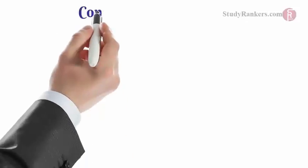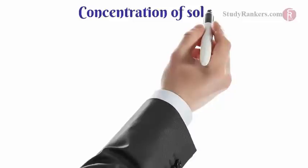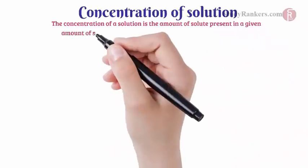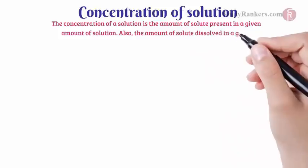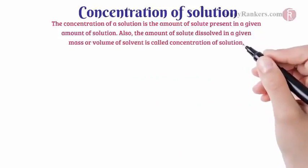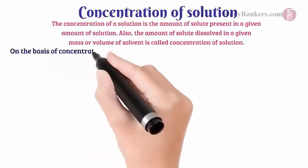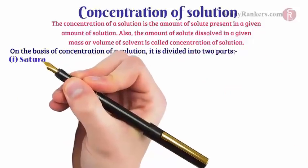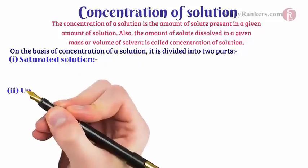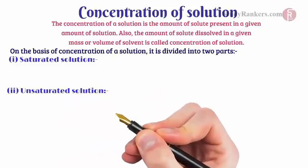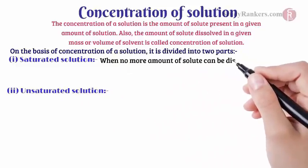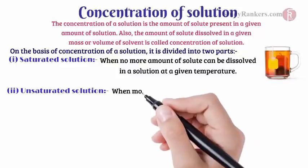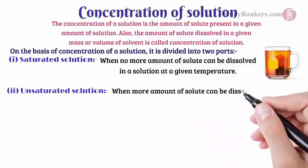We also need to calculate the concentration of a solution. The concentration of a solution is the amount of solute present in a given amount of solution. Also, the amount of solute dissolved in a given mass or volume of solvent is called the concentration of solution. On the basis of concentration, a solution is divided into two parts: saturated solution and unsaturated solution. A saturated solution is when no more amount of solute can be dissolved in a solution at a given temperature.